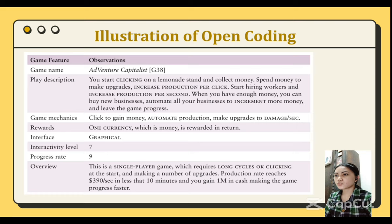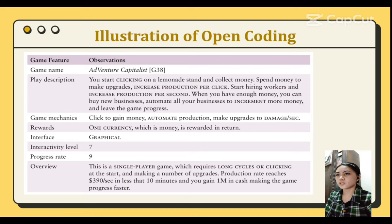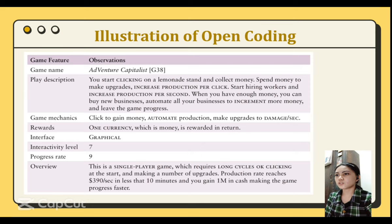Moving to the illustration of open coding: the figure shows preliminary open coding, where words in small letters are identified by the researcher as potential codes. The observation is focused on gameplay, game mechanics, rewards, interactivity, progress rate, and game interface. The games are rated using an 11-point interactivity scale, where 0 means play progressed without any player interaction, while 10 means the game progressed only slowly without player interaction. Progress through the levels was also rated on the same scale. At the end of each game session, the researcher wrote a brief overview and conducted preliminary open coding of the observation.